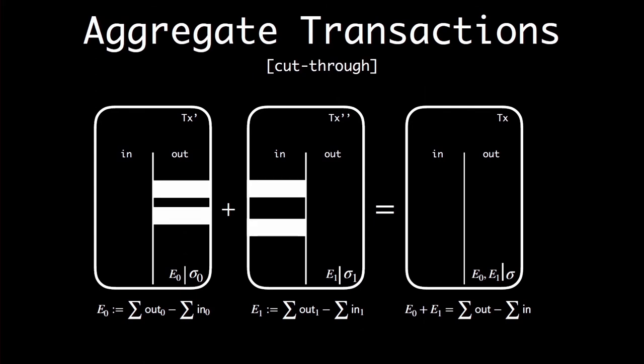There is another interesting thing — the scalability feature of MimbleWimble. If I have a transaction where the output goes back as input, the same commitment will appear both as input and as output in the final aggregated transaction. Therefore, it does not contribute to the final sum. What if we apply cut-through and just remove these commitments? The signature will still be valid because the excess has these terms cancelling each other. So the only price paid for aggregating two transactions is adding one group element, while getting rid of all the intermediate ones.